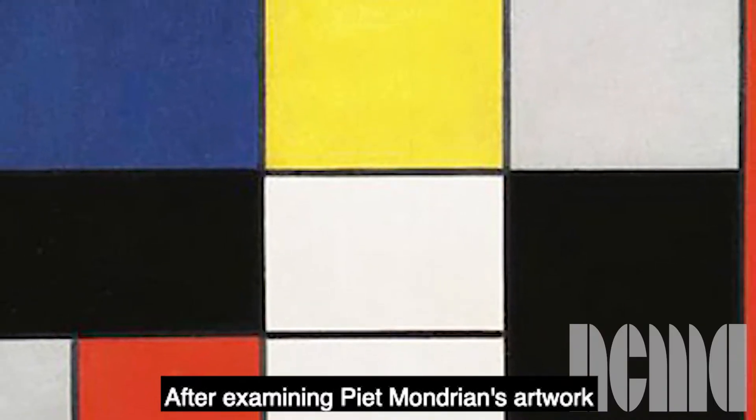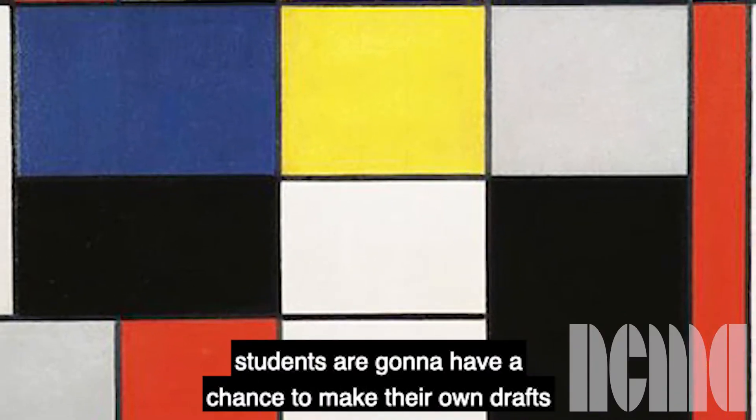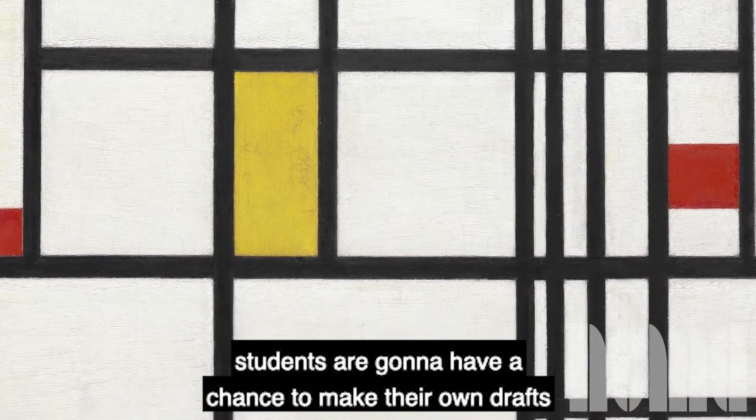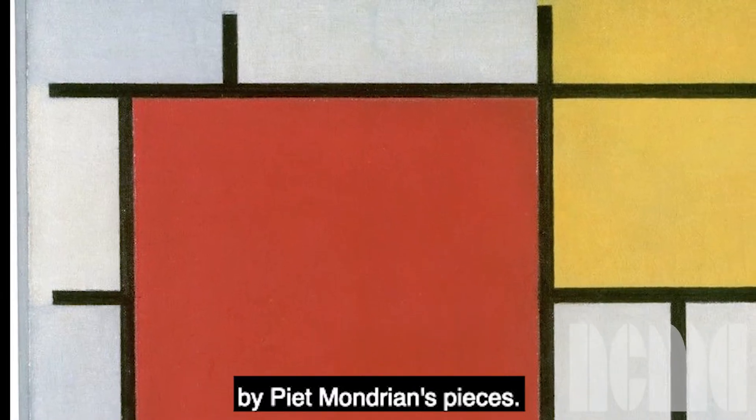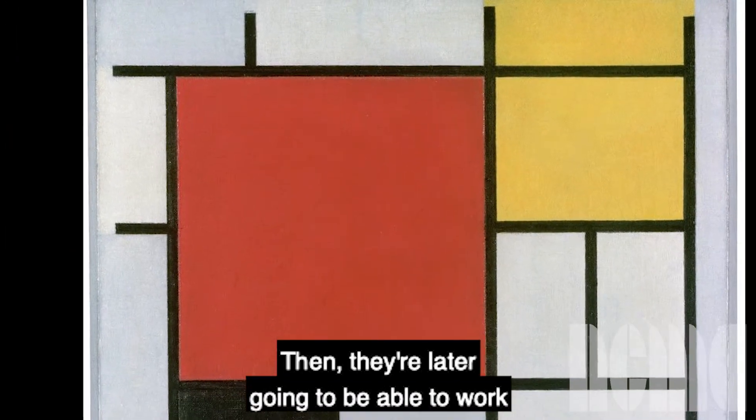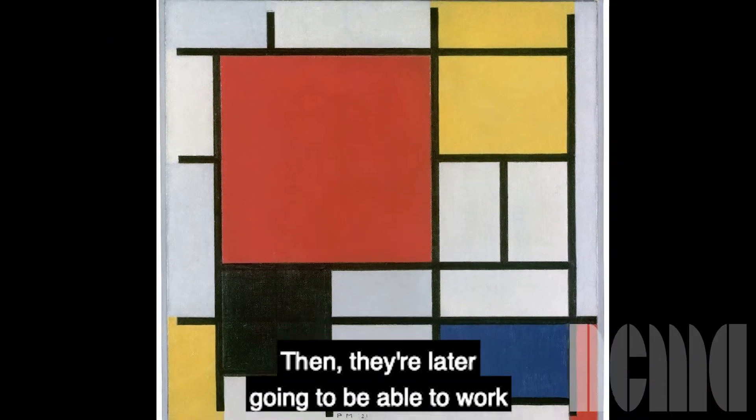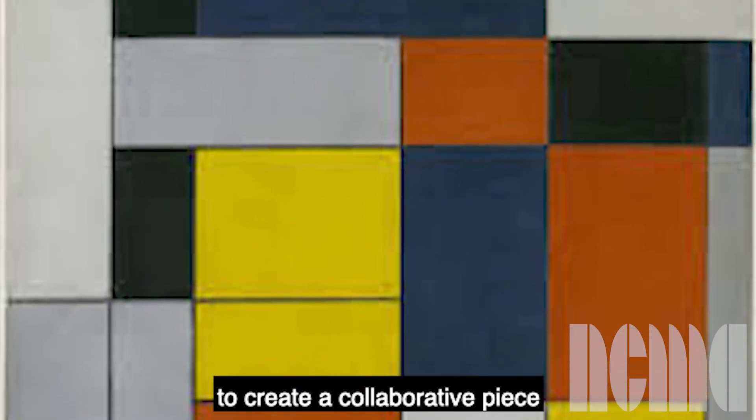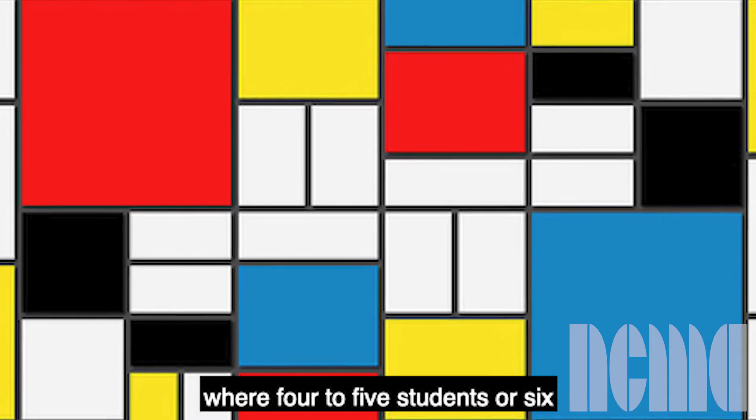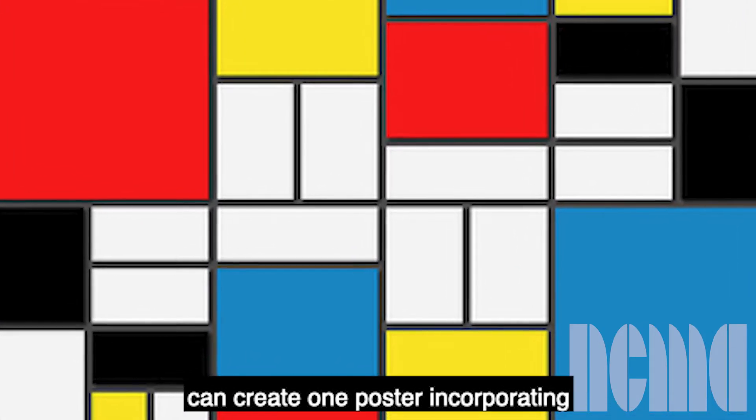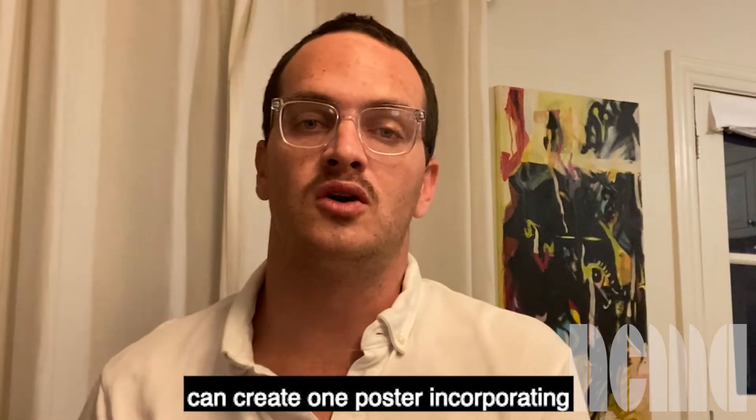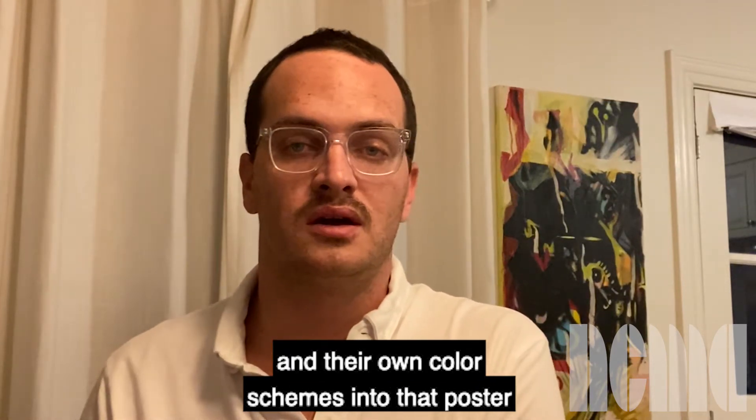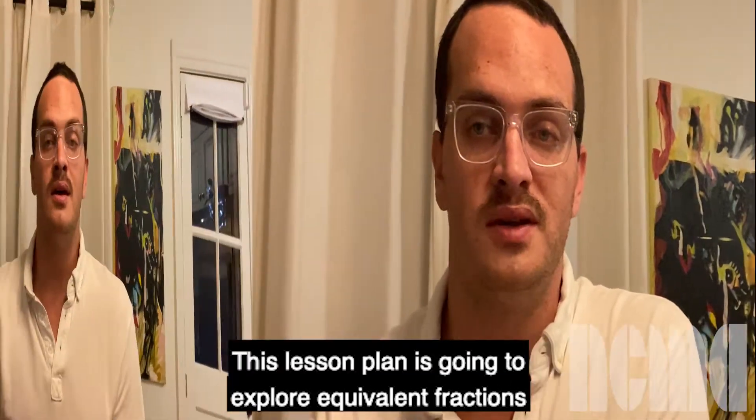After examining Piet Mondrian's artwork, students are going to have a chance to make their own drafts of their own pieces that are inspired by Piet Mondrian's pieces. Then they're later going to be able to work with their peers in their classroom to create a collaborative piece where four to five students or six can create one poster incorporating all of their own equivalent fractions and their own color schemes into that poster to make one collaborative piece.